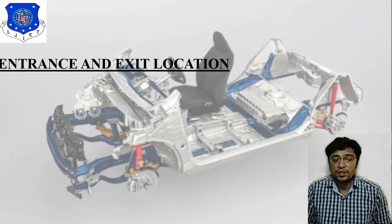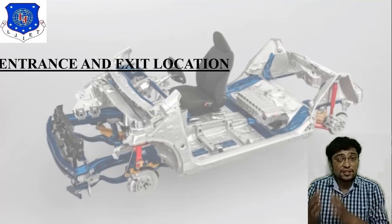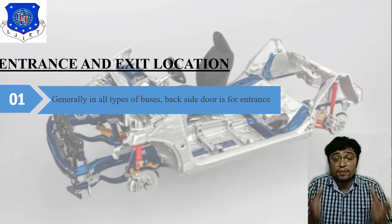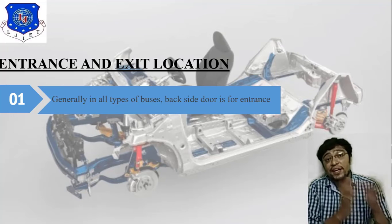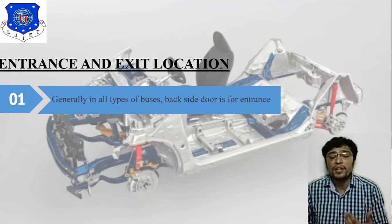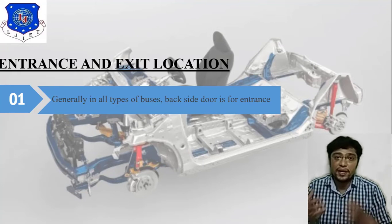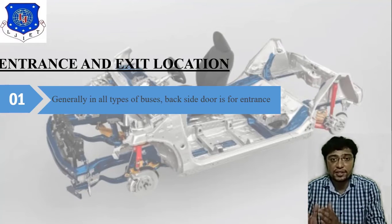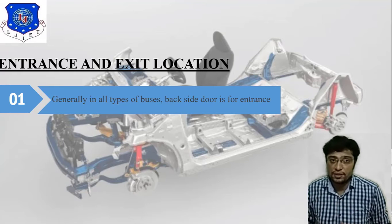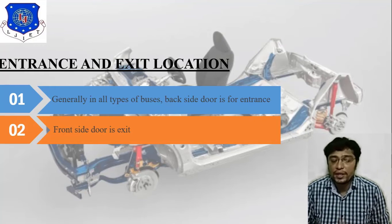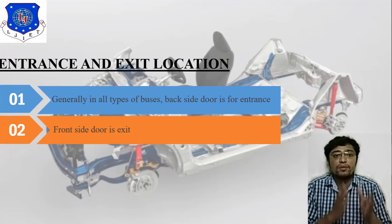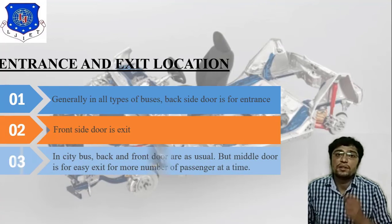Next is entrance and exit location. In the monocoque chassis there are mainly two doors — one for entrance and one for exit. First point: in all types of buses there are back side and front side doors, but the back side door is for entrance. Second point: the front side door is for exit. As with a minibus or semi-minibus, in the front door you find the exit and in the rear door you find the entrance.